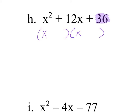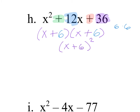For x squared minus 12x plus 36, I need factors of 36 that add to 12. Factors of 36: 6 times 6 — that's my 12. 4 times 9 is 13, so 6 and 6 it is. The first operation is a plus, so both signs are plus: x plus 6, x plus 6. This is actually x plus 6 squared. Using the formula: x squared plus 2 times 6 times x plus 6 squared — 2 times 6 times x is 12x. So I have x squared plus 12x plus 36.